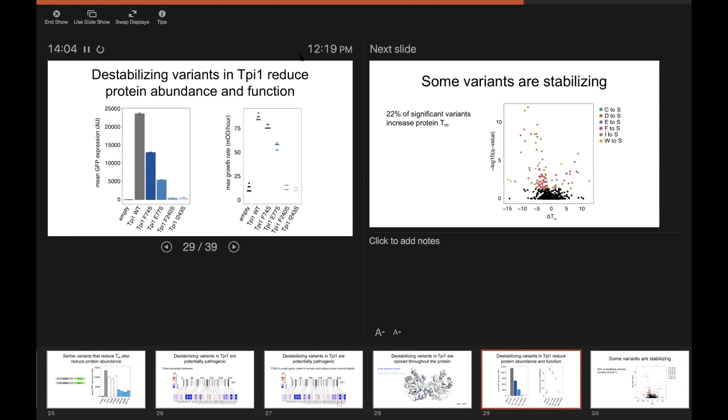And we saw that all four of our destabilizing variants actually significantly reduced protein abundance, although to varying degrees.